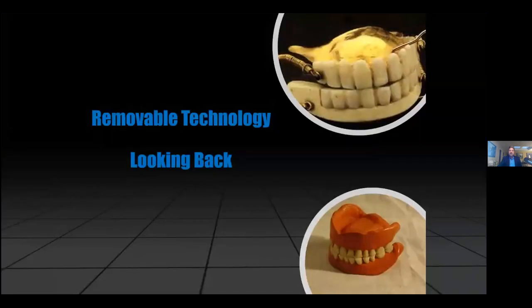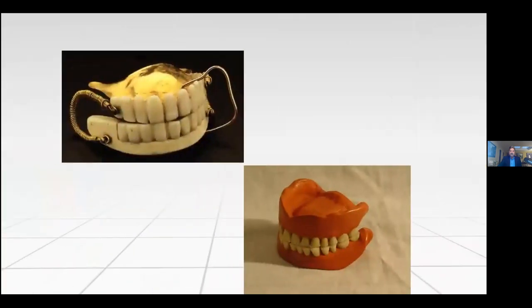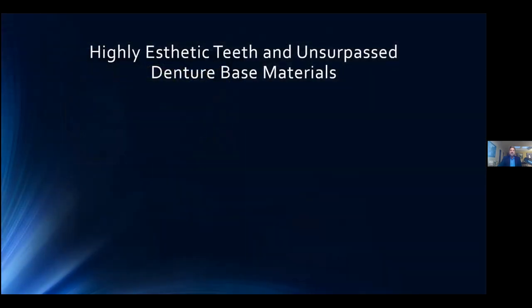Removable technology — looking back. We've come a long way from George Washington's dentures and the old vulcanite rubberized dentures from the 1940s and 50s. Right now we have great materials on the market for full denture technology. We now have highly aesthetic denture teeth that look like natural teeth, and unsurpassed denture base materials which look like natural gingiva, with high impact and flexural strength that hold up for years in the mouth.